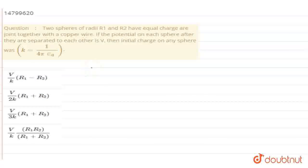Let's solve this question. Two spheres of radii R1 and R2 have equal charge and are joined together with a copper wire. If the potential on each sphere after they are separated from each other is V, then find the initial charge on any sphere.